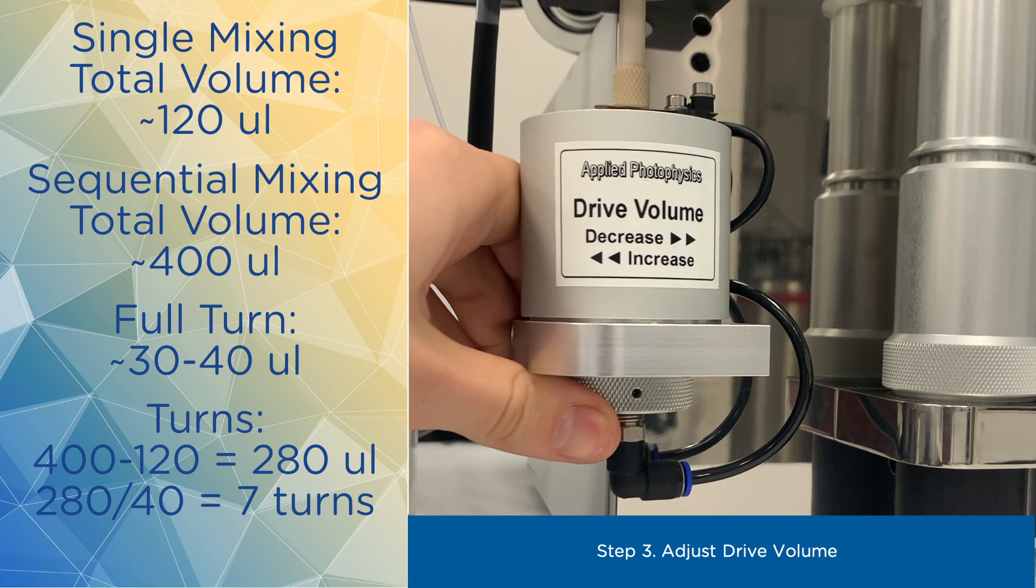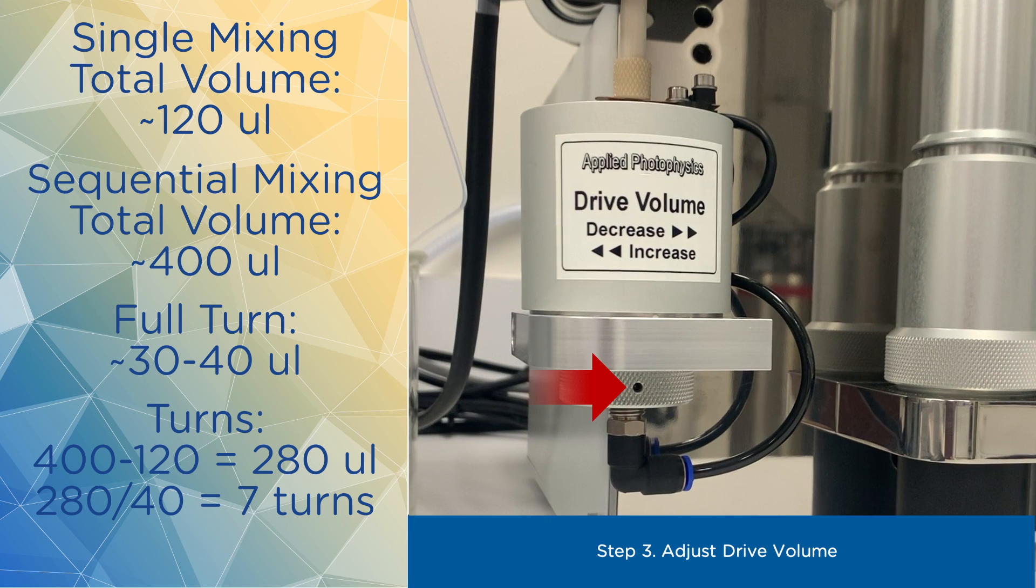This means that in order to increase the volume to 400 microliters or by 280 microliters, you need to turn this adjuster about 7 times. The easiest way to keep track is to pay attention to this grub screw hole. We genuinely don't have a better name for it.